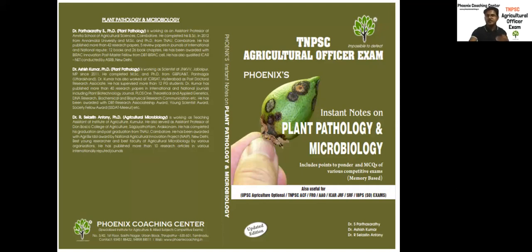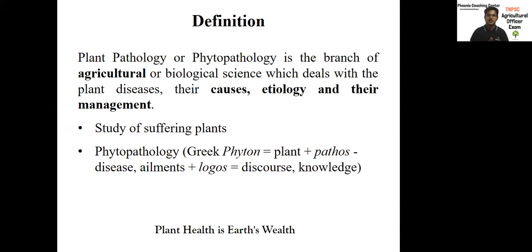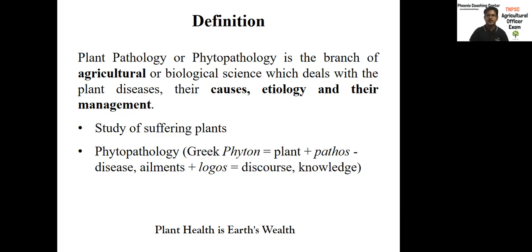Let us enter into the subject. Plant pathology is a branch of agricultural or biological sciences. What we mainly deal with in plant pathology is studying about the causes, their etiology, and their management. These three things are mandatory in plant pathology and jointly form the discipline. Before going into the in-depth lecture, knowing something brief about plant pathology and its origin is mandatory.